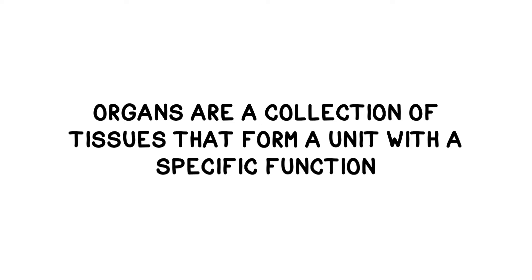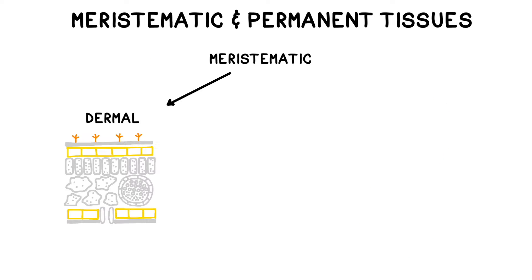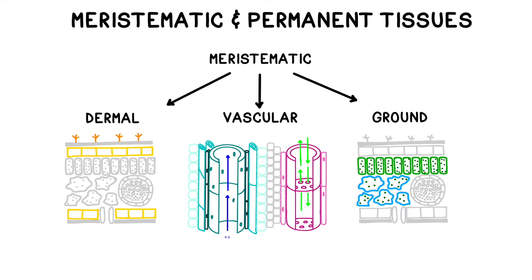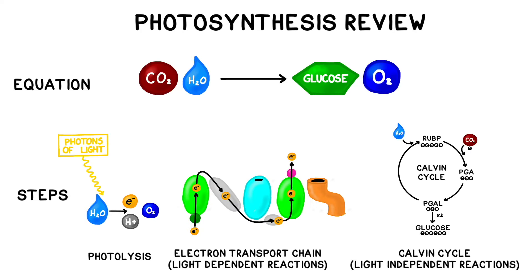Organs are a collection of tissues that form a unit with a specific function — for instance, the stomach in humans, or a single leaf in a plant. Plants also contain specialized tissues and cells, but these will be covered in another video. Plants are multicellular eukaryotic organisms. Most survive by absorbing water and nutrients from their environment and by harnessing energy from the sun in a process known as photosynthesis.